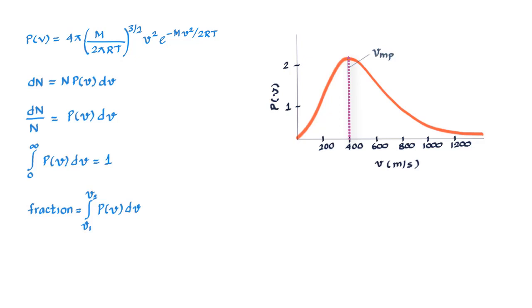Now if you know P(v) which we do, we can calculate the most probable speed VMP by finding dP upon dv when it is 0. So if we take the differential of P(v) and then equate it to 0, what we get is VMP is equal to root of 2RT upon M and this is called the most probable speed.